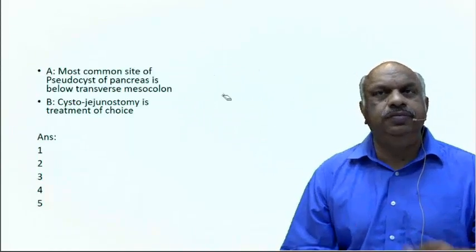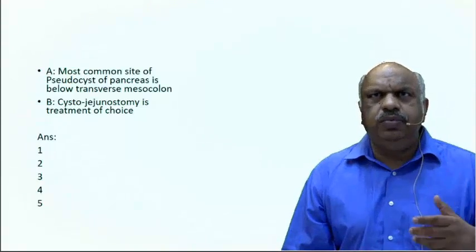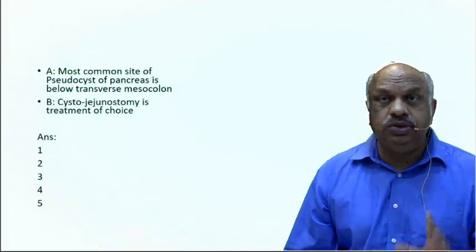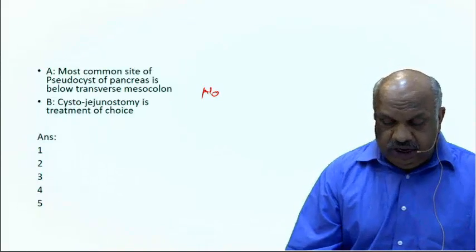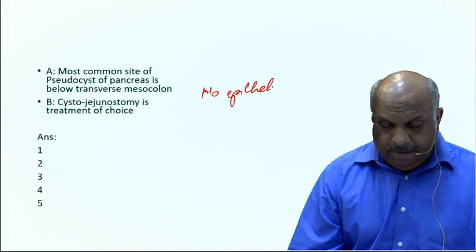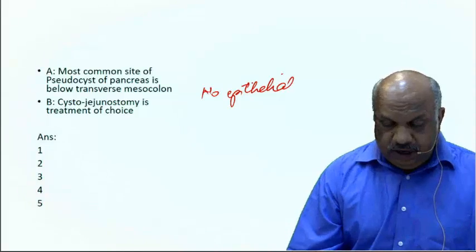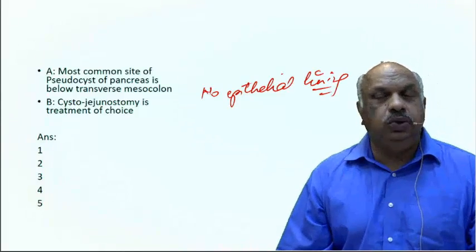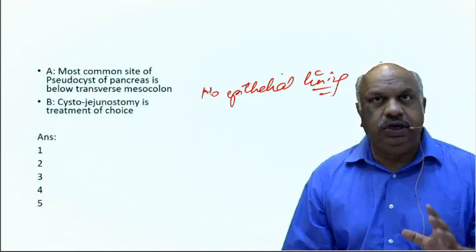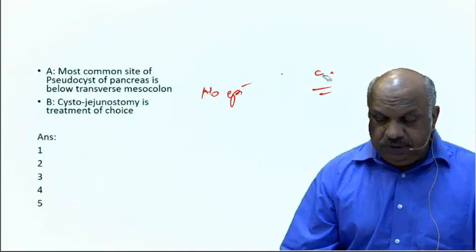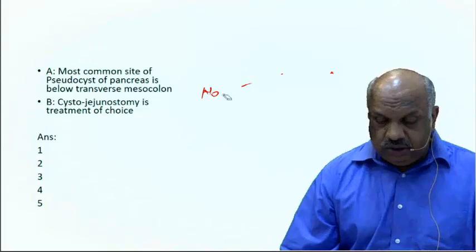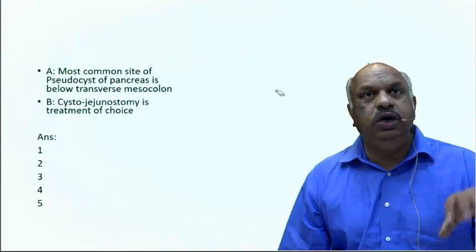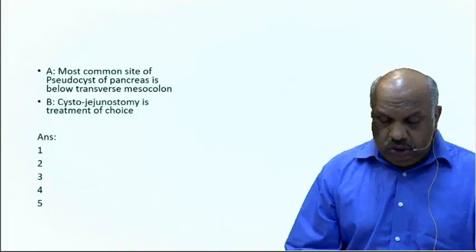The reason it is called a pseudocyst is that it has no epithelial lining. It is only lined by granulation tissue, which is why it is termed a pseudocyst rather than a true cyst.